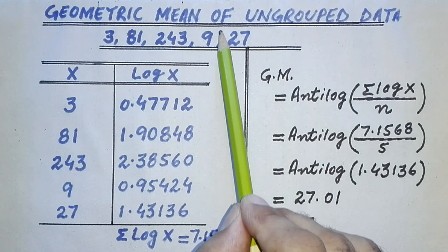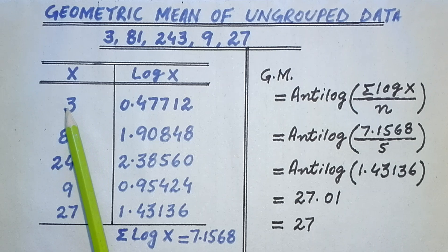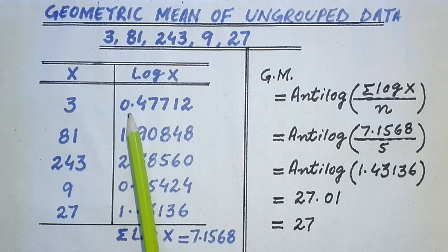We take this ungrouped data, and first we add a column for log x. For log x, we take each x value and find its log with the help of a calculator.